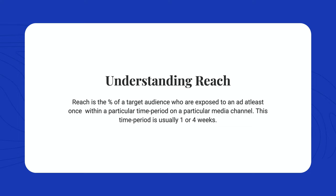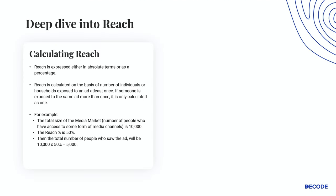Reach is the percentage of target audience who are exposed to an ad at least once within a particular time period on a particular media channel. This time period is usually one to four weeks. Reach can be expressed in absolute terms or as a percentage, and it is calculated on the basis of the number of individuals or households exposed to an ad at least once. So if someone is exposed to the same ad more than once, it is only counted as one.